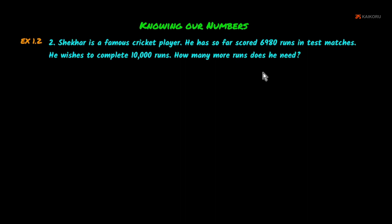So, if we want to reach 10,000 runs, what do we do? The difference is subtraction — finding how many more means we use subtraction. So, let's look at the word problem.